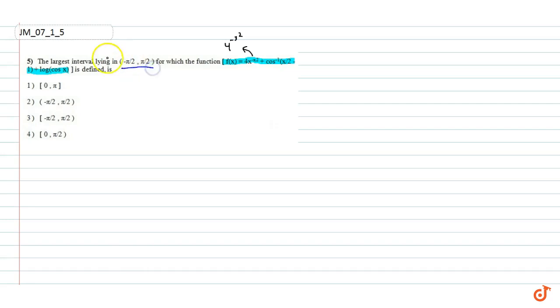We have to find the maximum interval in which this function is defined. So our function f(x) = 4^(-x²) + cos inverse((x/2) - 1) + log(cos x). We know that the value of (x/2) - 1 lies between -1 to 1.